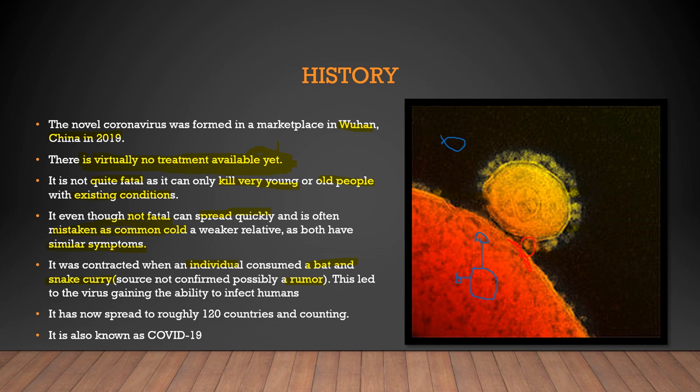This led to the virus gaining the ability to infect humans. It was actually a virus in some reptile or mammal that adapted so it could infect people, and it changed a bit in the first person who got infected. It has now spread to 120 countries and counting. It is also known as COVID-19, as I already mentioned. So this is roughly the history of the coronavirus.